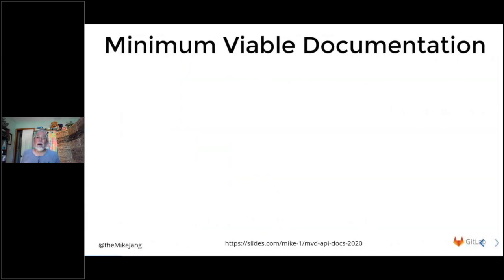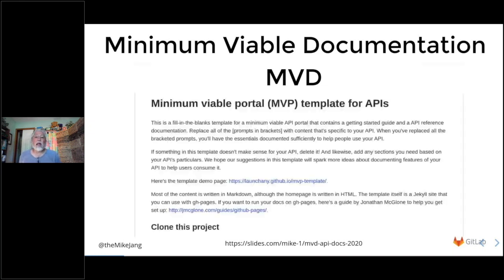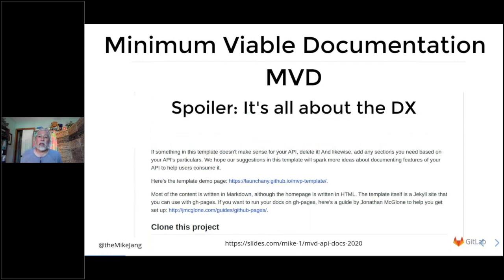So what is this Minimum Viable Documentation — MVD for short? James Higginbottom has a template for something similar; he calls it a minimum viable portal, and I think it's a great starting point. But to me, MVD is more than just a bunch of endpoints. It's more than just reading code. Your RESTful API docs, even your GraphQL docs — really your docs as a whole — need to provide an excellent developer experience. The spoiler here is that what we're talking about is all about the developer experience, DX for short.